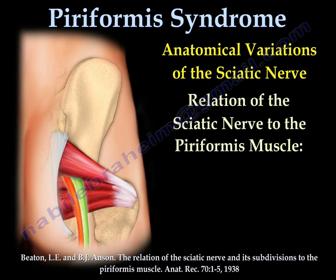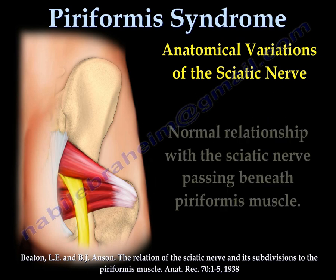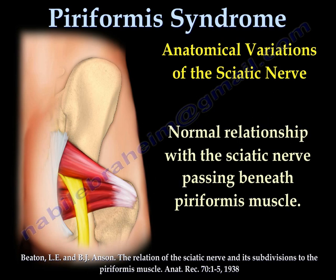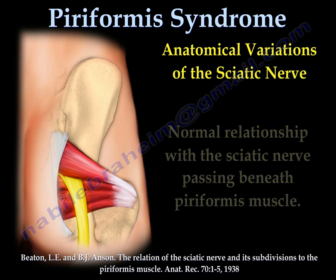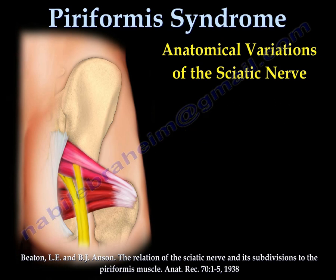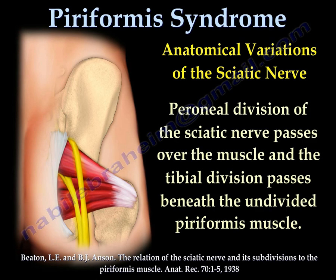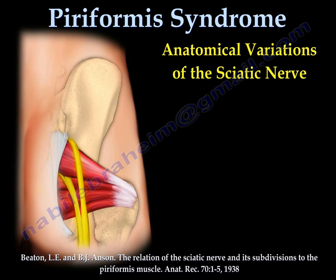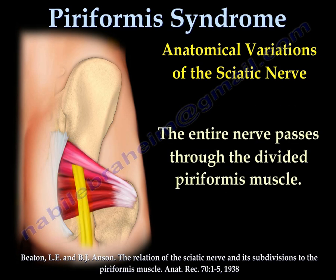The relationship of the sciatic nerve to the piriformis varies. Number one: the sciatic nerve passes underneath the piriformis muscle. Number two: the piriformis splits and the nerve splits, as you can see from the picture. Number three: one piriformis, and the nerve splits above and below the piriformis. Number four: the entire nerve passes through the split piriformis muscle.